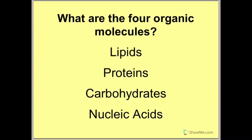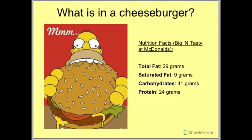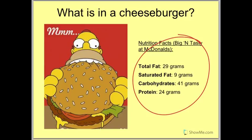The four organic molecules are lipids, proteins, carbohydrates, and nucleic acids. What organic molecules do you think can be found in a cheeseburger? You see the nutrition facts here — we're going to pay attention to things like carbohydrates, protein, and lipids. Fat is lipids.